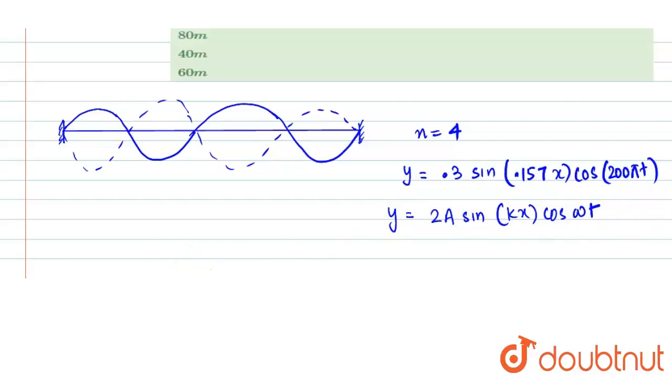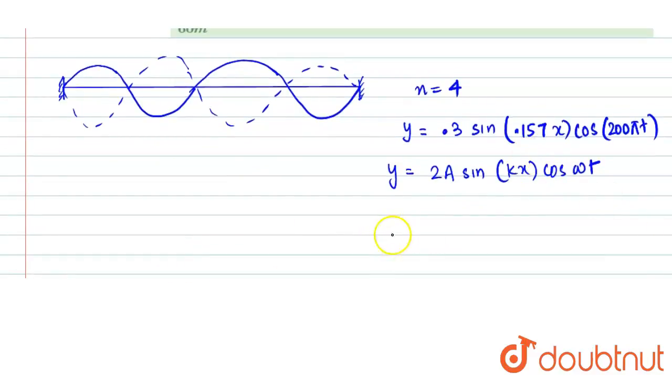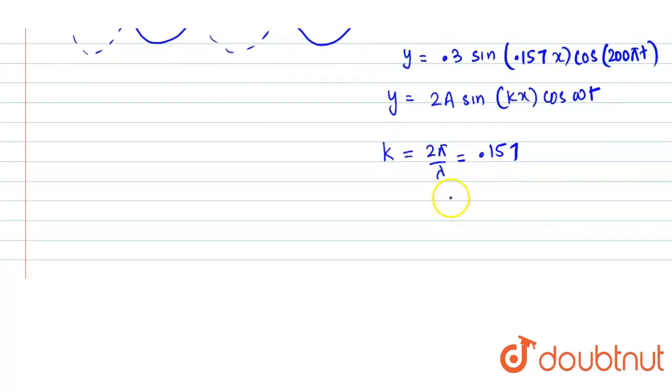Now we can see that the value of k which is 2π/λ is given to us as 0.157. And from here we can find the value of lambda as well.